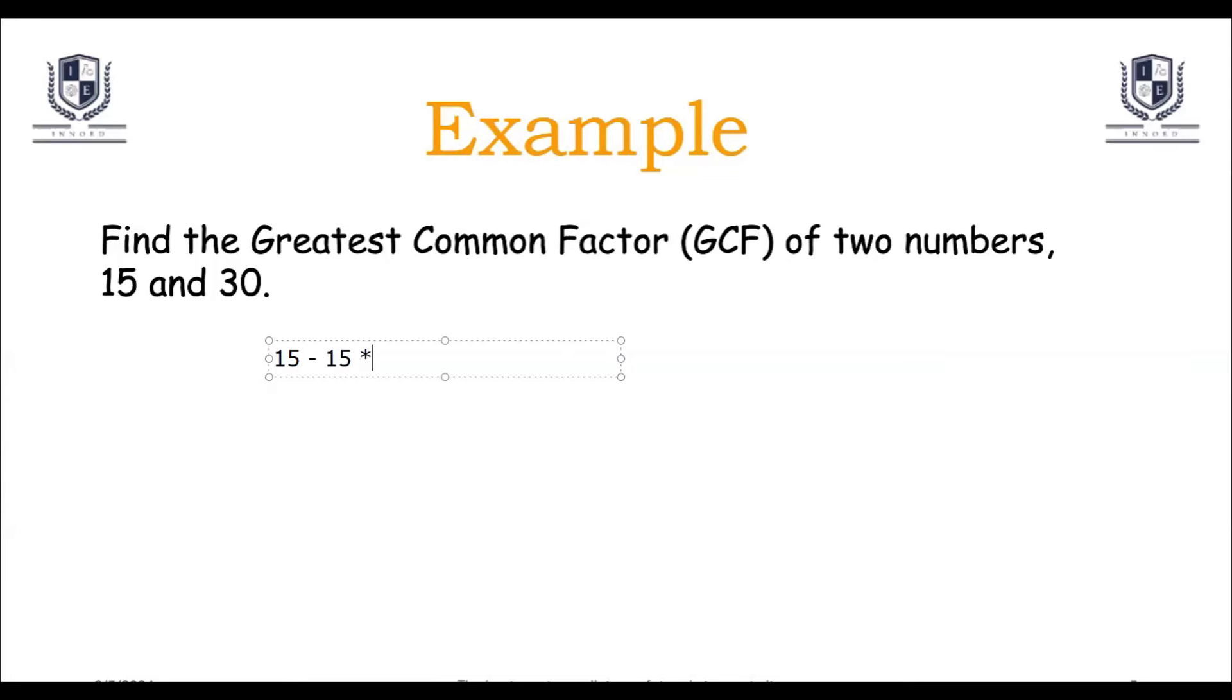To find the greatest common factor, we need to find the factors of each number. The factors are the numbers that divide without leaving a remainder. Let's find the factors of 15 first, and then the factors of 30.